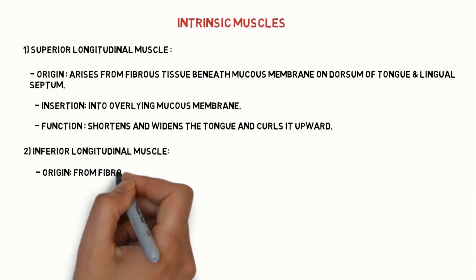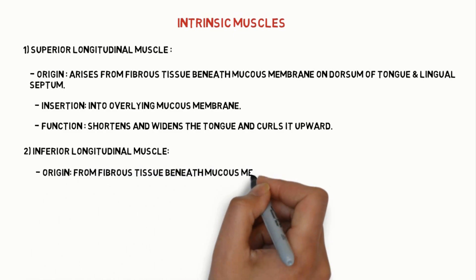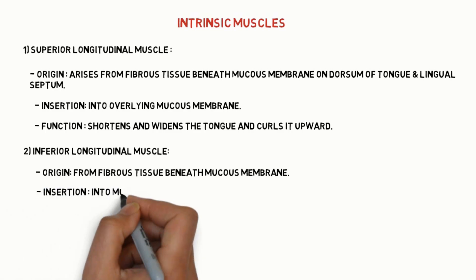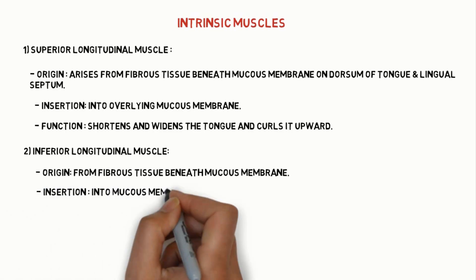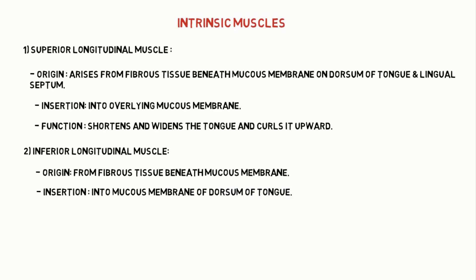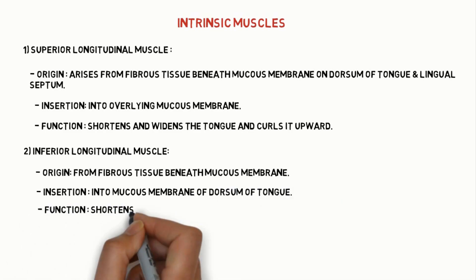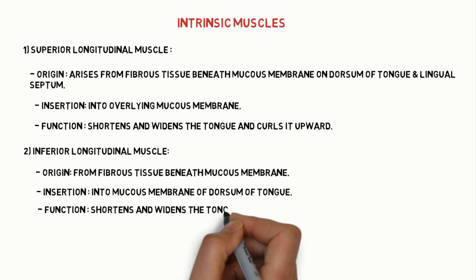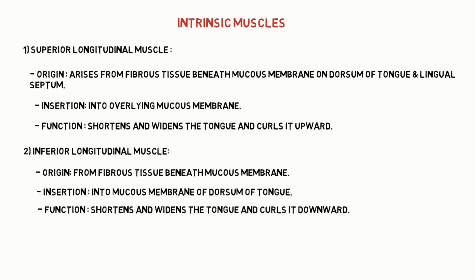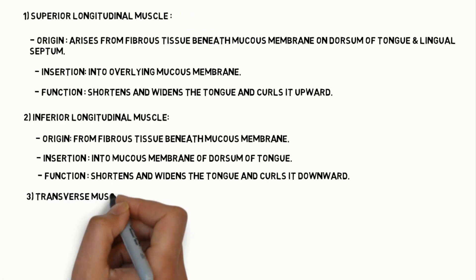The second intrinsic muscle is the inferior longitudinal muscle. It originates from fibrous tissue beneath the mucous membrane. It is inserted into the mucous membrane of the dorsum of the tongue. Function: it shortens and widens the tongue and curls it downwards.